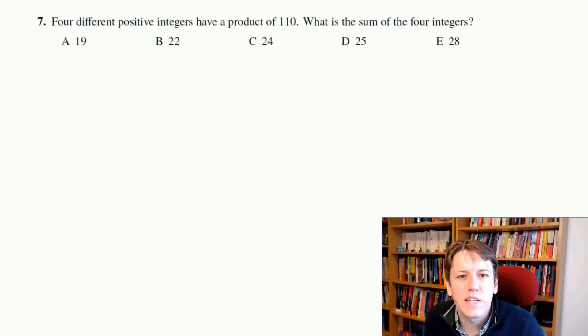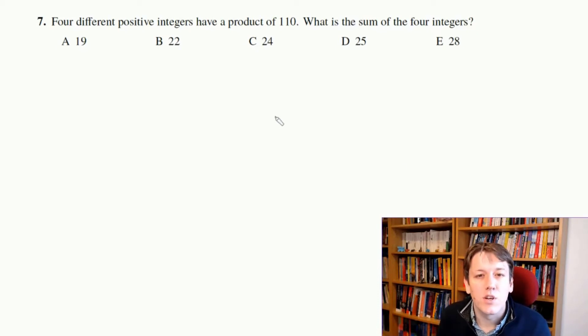Four different positive integers have a product of 110. What's the sum of the four integers? The prime numbers are often referred to as the building blocks of arithmetic, the building blocks of numbers. It's because they really represent the DNA of a number. So in a question like this, working out the factorisation of 110 is really key.